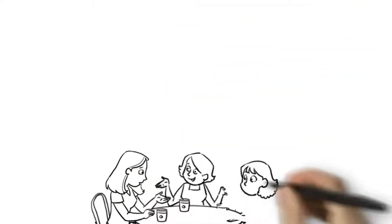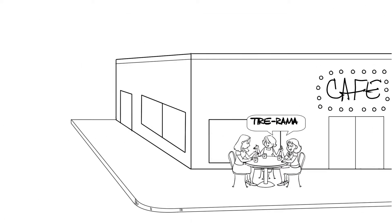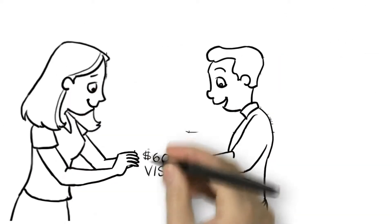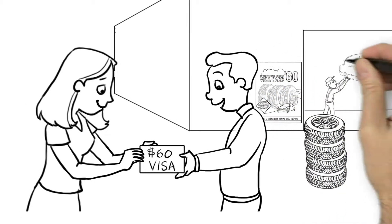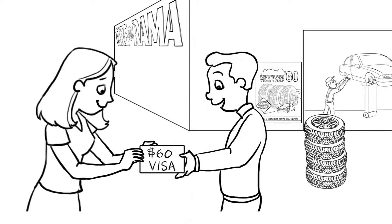So I asked some friends. They said Tire-rama. There's one right around the corner. Tire-rama helped me decide on a set of Yokohama tires that qualified for a $60 Visa rebate. I got an oil change and a free brake inspection at the same time.